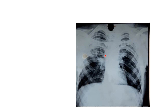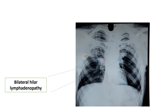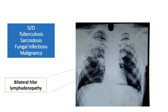In this x-ray, opacity is present in the hilar area in both lung fields — in the left hilar region and the right hilar region — because of bilateral hilar lymphadenopathy. Whenever a patient has hilar lymphadenopathy, you have to differentiate whether it may be due to tuberculosis, sarcoidosis, fungal infection, or malignancy. Hilar lymphadenopathy is characteristically seen in all these types of infections and malignancy.